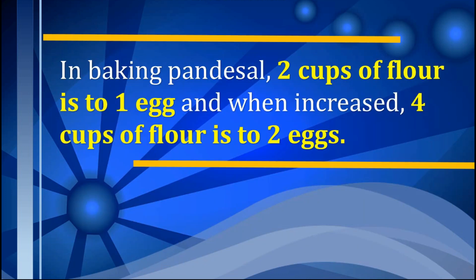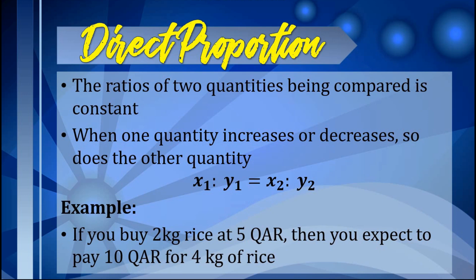In baking pandesal, two cups of flour is to one egg, and when increased, four cups of flour is to two eggs. This is an example of direct proportion because the ratios of two quantities being compared is constant, and when one quantity increases or decreases, so does the other quantity. In symbols, we write direct proportion as x₁ is to y₁ equals x₂ is to y₂. To solve for the missing term, we equate the product of the extremes, x₁ and y₂, with the product of the means, y₁ and x₂.